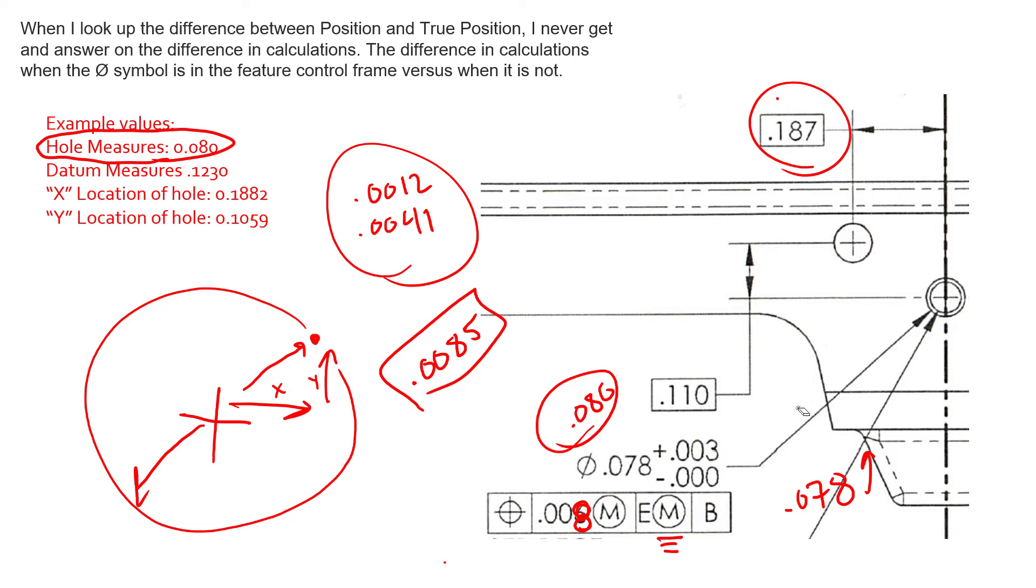And the MMB modifier allows datum shift. Now this is not bonus tolerance, but it does act very similarly in the fact that we can shift the part on the datum simulator, which would be a pin right here. We can shift this part over to try and bring in our feature to be in tolerance. So we gain a little bit of clearance from the larger size of our feature.